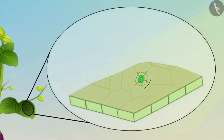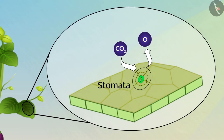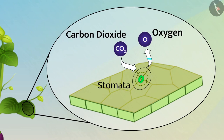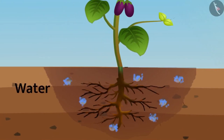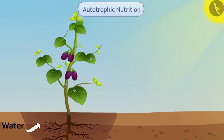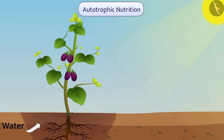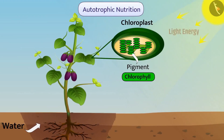On the leaf surface, there are microscopic pores called stomata. Stomata exchange gases. With their help, carbon dioxide is taken from the air and oxygen is released into the air. Similarly, the roots of the plant absorb water from soil and send it upward so that the water requirement can be fulfilled. Green leaves have chloroplasts that contain a pigment called chlorophyll. During photosynthesis, chlorophyll absorbs light energy.